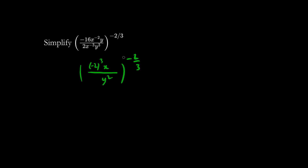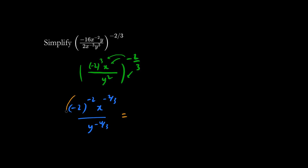We're going to use distribution — distribute the exponent top and bottom. We have negative 2 cubed multiplied by negative 2 thirds, so the 3s cancel out, giving negative 2 to the negative 2. We have x to the negative 2 thirds, and on the denominator we multiply to get y to the negative 4 thirds. We prefer positive exponents, so let's focus on simplifying.